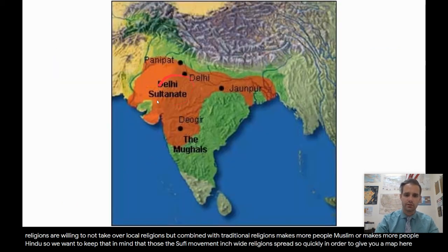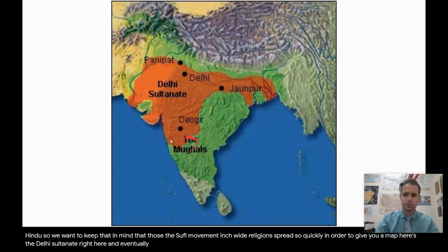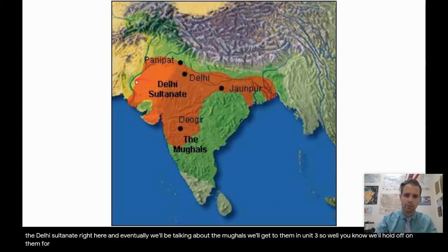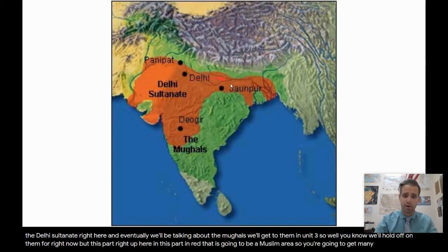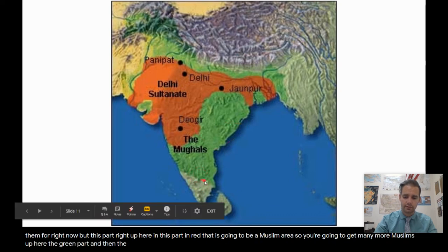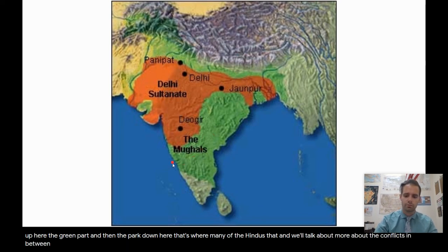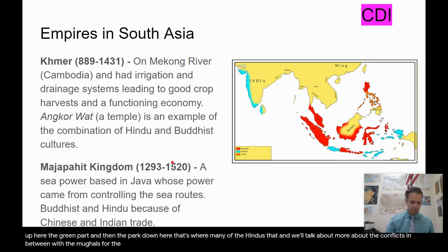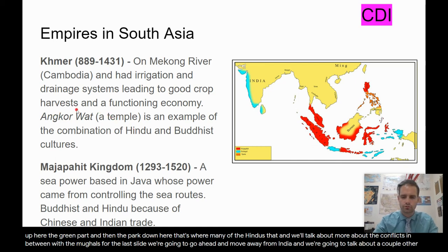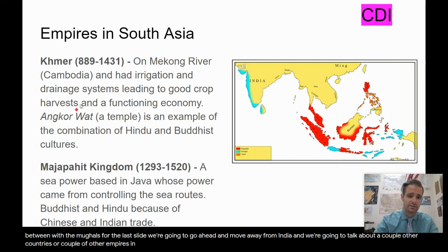Here's the Delhi Sultanate on the map. We'll be talking about the Mughals in Unit 3, so we'll hold off on them for right now. The part in red is going to be a Muslim area — many more Muslims up there. The green part and down south is where many of the Hindus live. We'll talk more about the conflicts between those two groups when we get to Unit 3 with the Mughals. Now let's move away from India and talk about a couple of other empires in Southeast Asia.